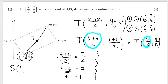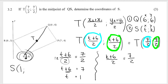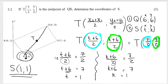Then I do the same thing to solve for K. So K plus 6 over 2 must equal 7 over 2. In the same way, we're dividing by 2, so we do the inverse: times by 2 again gives me 7. So K plus 6 equals 7, meaning K is also 1. Therefore S is (1, 1).